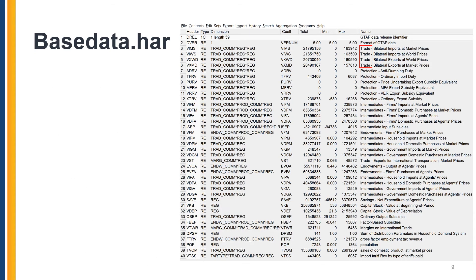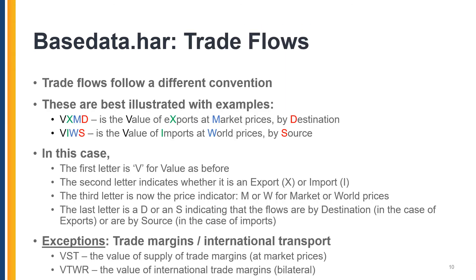We now turn to trade flows in the base data. Trade flow coefficients follow a slightly different convention. Consider VXMD, the value of exports at market prices by destination. Also consider VIWS, the value of imports at world prices by source. The first letter is V for value as before. The second letter is X or I, indicating an export or import. The third letter indicates the price: M means measured at market prices, while W indicates the flow is measured at world prices. The last letter is D or S, indicating the data are by destination or by source.